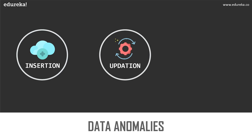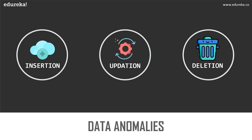The next anomaly is update anomaly. What if Mr. Rakshat leaves the company or is no longer the head of the marketing department? In that case, all the employee records will have to be updated, and if by mistake we miss any record, it will lead to data inconsistency. The final anomaly is deletion anomaly — in our employee table, two different pieces of information are kept together: employee information and department information. If employee records are deleted at the end of the financial year, we will also lose the department information.